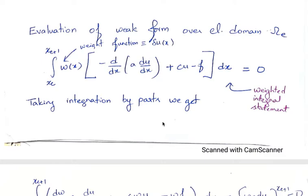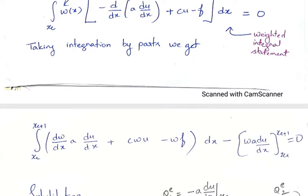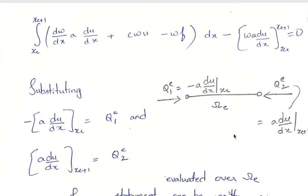The steps are: discretize your domain, then derive the element matrix equations over an arbitrary element domain. To do that we evaluate the weak form over element domain omega_e. First we write down the weighted integral statement — the integral of the weight function multiplied by the residual equals zero — then we take integration by parts and substitute the boundary conditions. The incoming fluxes at both ends are denoted by q_{e1} and q_{e2}.